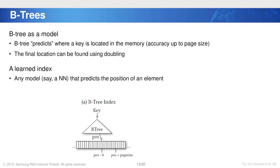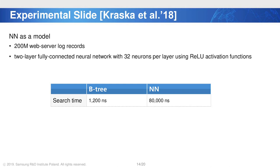Why not replace a B-tree entirely with a fully connected two-layer neural network, trained on 200 million web server logs? It turns out this is actually a disaster — the neural network works much, much worse than a B-tree. The intuitive reason is that machine learning is better at learning just a few things at a time, not the whole distribution of everything. It's not as accurate as a B-tree.